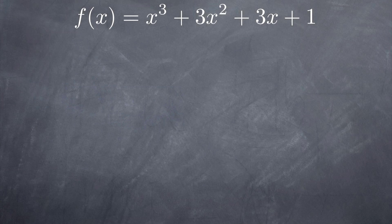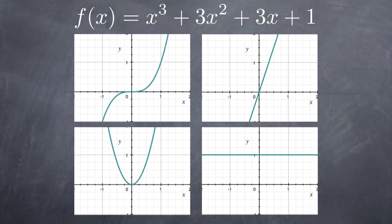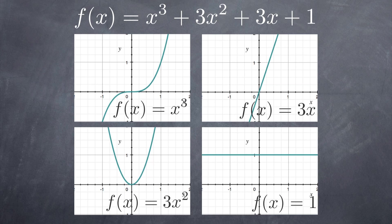Keep in mind also that a function can itself be comprised of multiple functions. This polynomial function is a great example. The entire thing represents a function, but so do each of the four terms inside it. If taken separately, each one would pass the vertical line test. This function is therefore what we call a combination of other functions.